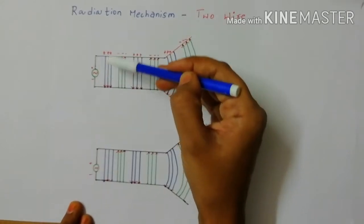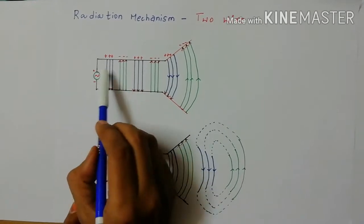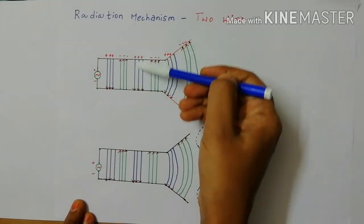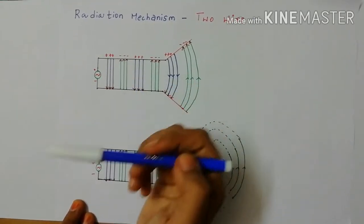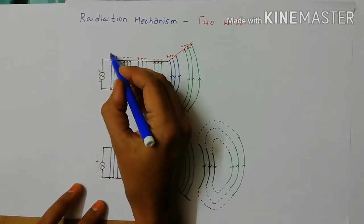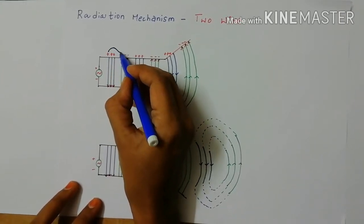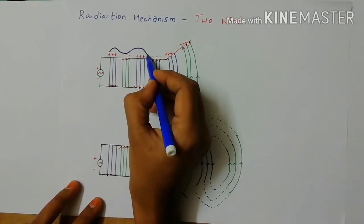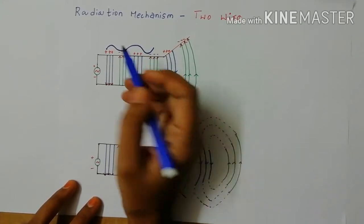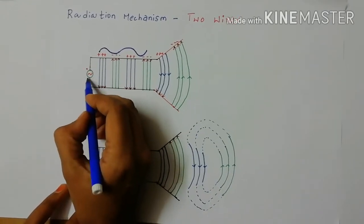This is one conductor and this is another conductor. After the source is applied, field lines are formed between the two conductors, and positive and negative charges are formed. The signal propagates from positive towards negative, then negative towards positive — as shown by the AC waveform drawn here.